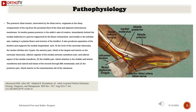The tendon runs medial to the subtalar axis, making it a plantar flexor and inverter of the hindfoot. It also produces supination of the forefoot and supports the medial longitudinal arch. At the level of the navicular tuberosity, the tendon divides into three parts: the anterior part (largest) inserts on the navicular tuberosity, inferior capsule of the medial navicular-cuneiform joint, and inferior aspect of the medial cuneiform; the middle part attaches to the middle and lateral cuneiforms, cuboid, and bases of the second through fifth metatarsals.